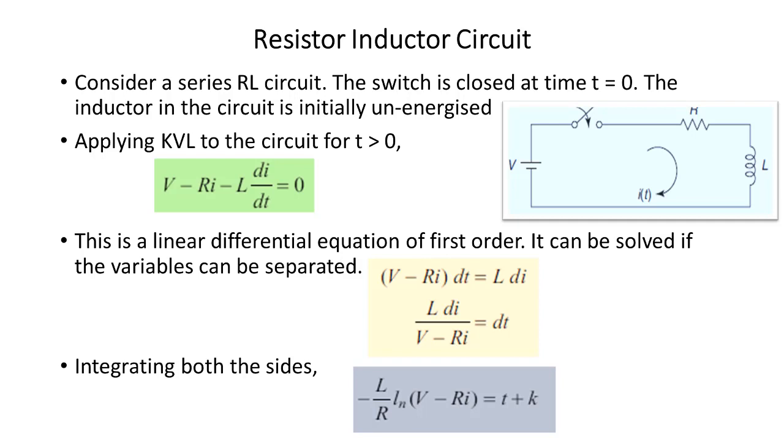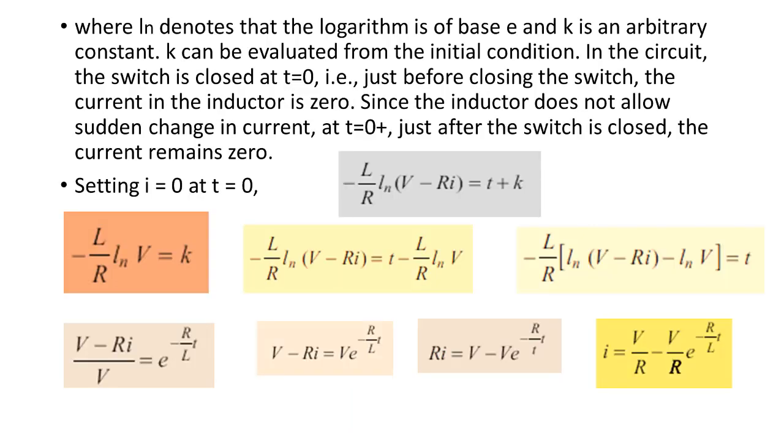Now rearrange this equation, take dt at one side and di at the other side, and take the integration at both sides. When we take the integration, the constant term K comes here, and this constant is very important. We find out this constant value from the initial condition.